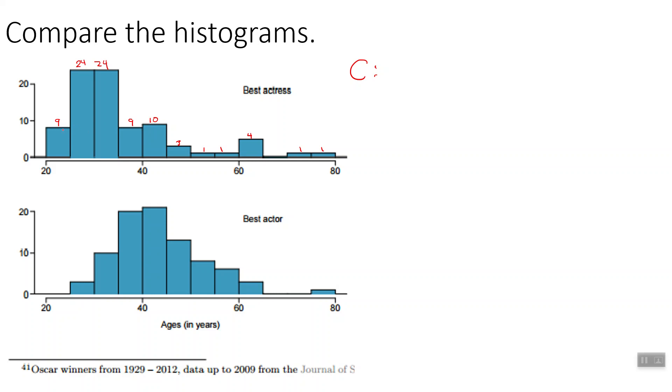So if we add these up, 24 plus 24 is 48, plus another 9 is 57, 66, 76, 80, 85, 86, 87. So 87 plus 1 is 88, divided by 2 is 44. So we're looking for 44, so 9 by here, plus 24 more is 33, plus 24 more, we're past it. So that means our median is going to be in here.